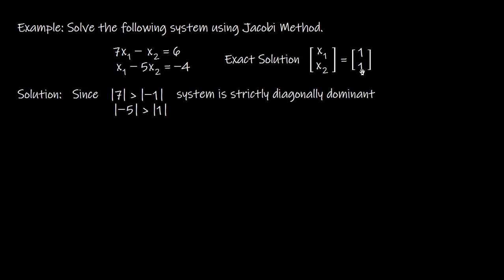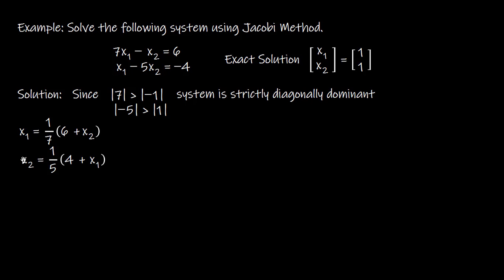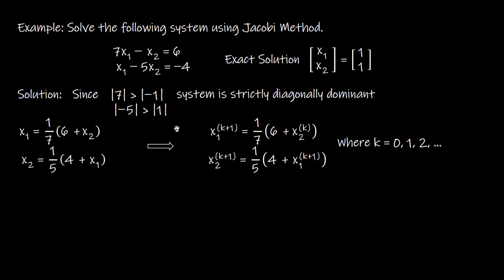As the first step of the Jacobi method, we find the solution expression of X1 from the first equation and X2 from the second equation. Hence X1 = (1/7)·(6 + X2) and X2 = (1/5)·(4 + X1). Now that we have the solution expressions, we construct the Jacobi iterative scheme by raising the superscript k+1 on the left-hand side variables.